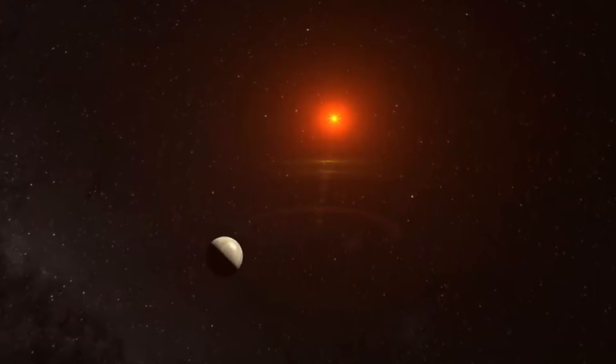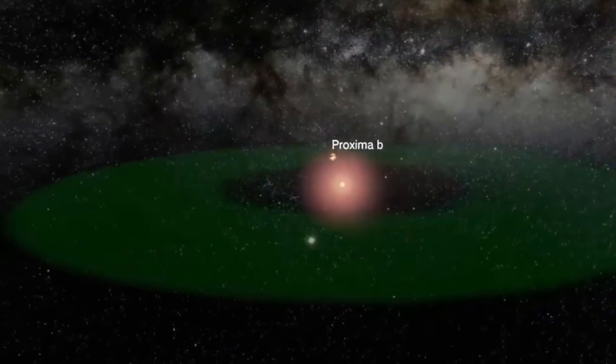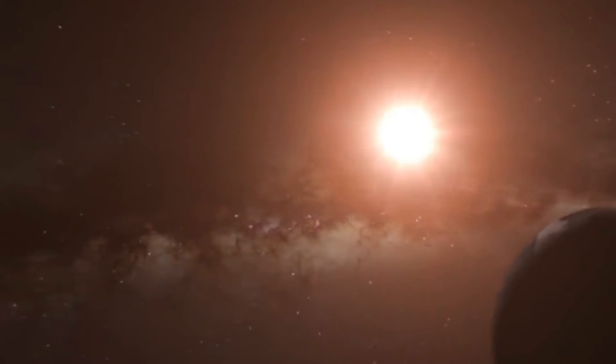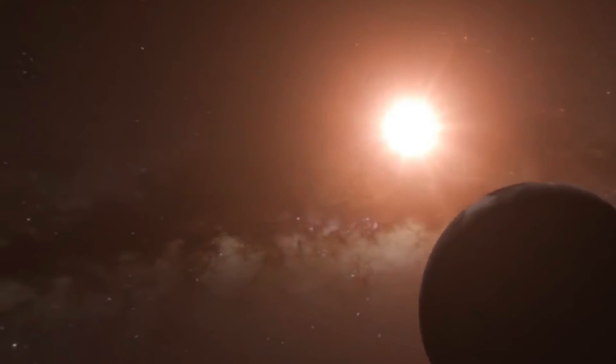There is a good chance that Proxima Centauri b is tidally locked to its host star. This means that the same side of the planet always faces Proxima Centauri, which is the case for a planet in an orbit with a period of one-to-one.